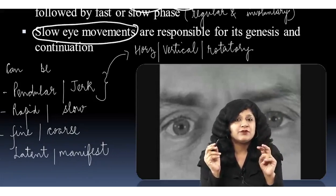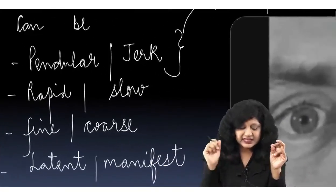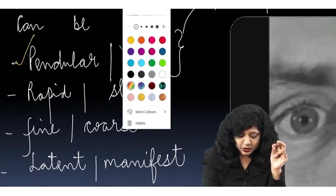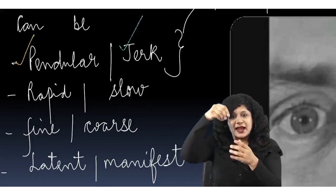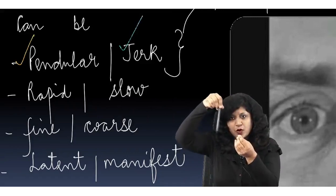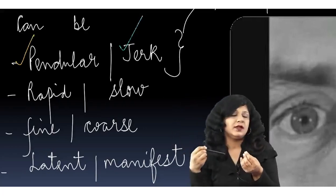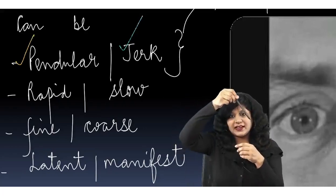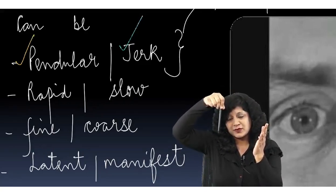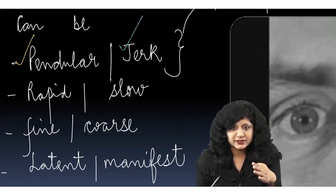The broad categories of nystagmus are pendular nystagmus or jerk nystagmus. A pendulum has regular to-and-fro oscillatory motions where both phases are slow and the same — that is called pendular. Jerk means it is going in one direction slowly and coming back with a jerk — a slow movement followed by a rapid fast movement. That is a jerk nystagmus.